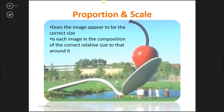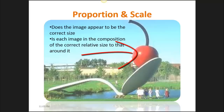Proportion and scale often get confused. Firstly, does the image appear to be the correct size? If you look at the spoon, is the spoon the right size? That is its scale. Well, the answer is no — it's huge. It's a very large sculpture by the artist Oldenburg, and we know that is not the right scale. Looking at proportion, we can ask ourselves how do the different elements of the work relate to each other? Is the cherry the right size in proportion to the spoon? The answer is probably yes. So scale is really relating to the size of something compared to how we know it should be, while proportion is relating different elements of something together to see if they work together.